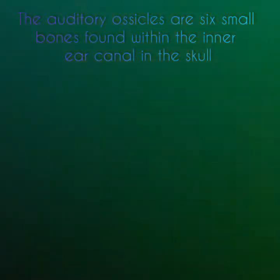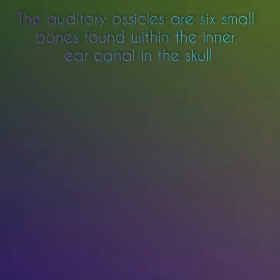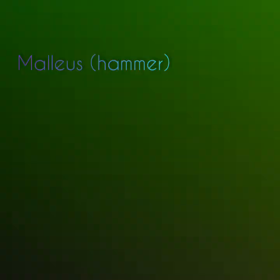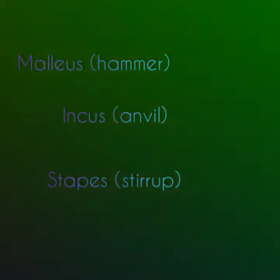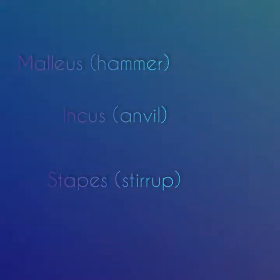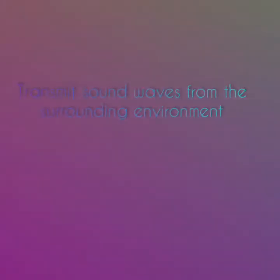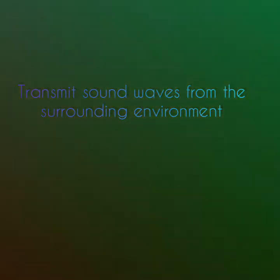There are three auditory ossicles on each side of the head, known as the malleus (also known as the hammer), the incus (also known as the anvil), and the stapes (also known as the stirrup). They work together to transmit sound from the surrounding environment to the structures of the inner ear.